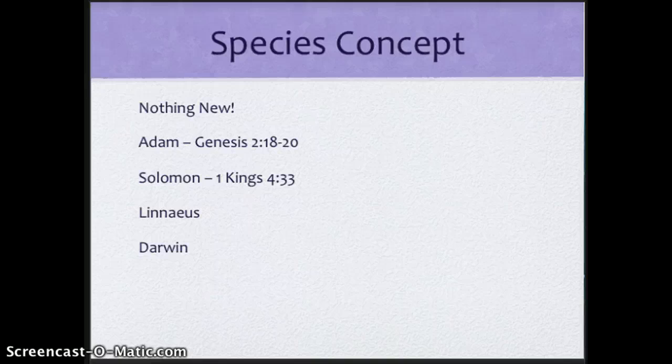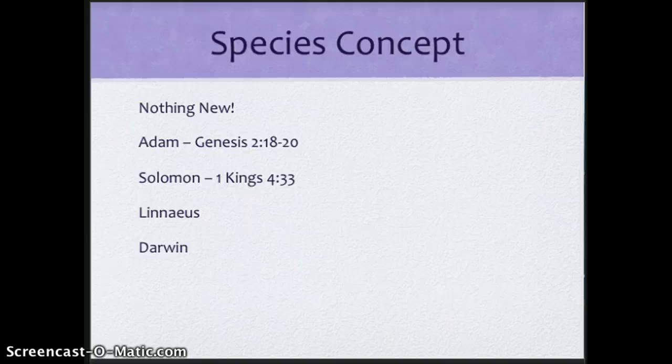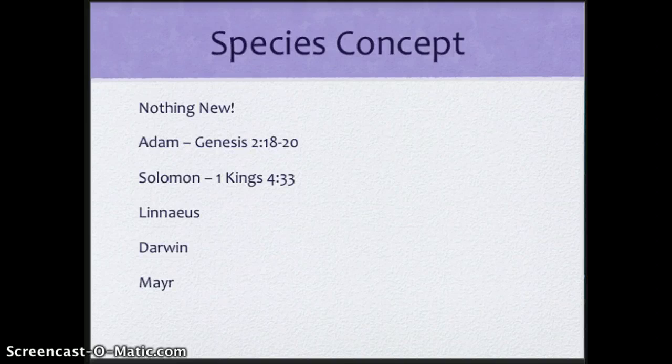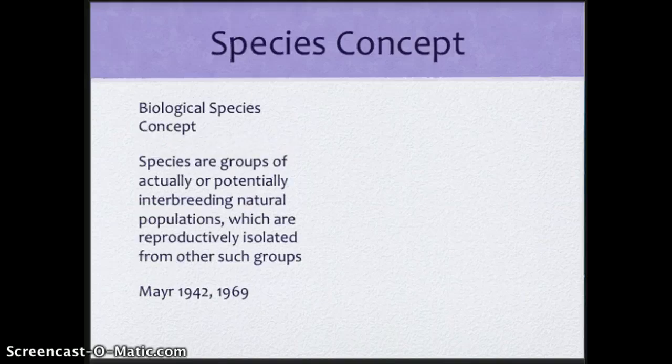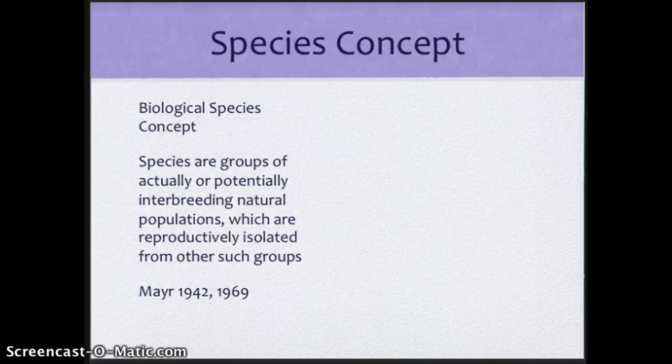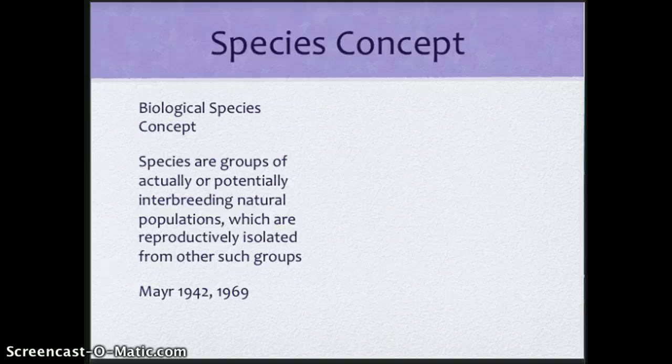And then in the 1940s, Ernst Mayr came up with the biological species concept. In fact, his biological species concept says that species are groups of actually or potentially interbreeding natural populations which are reproductively isolated from other groups. So how in the world do we know if they're interbreeding populations? How do we know if they're reproductively isolated from other such groups?